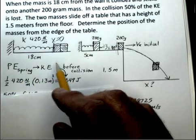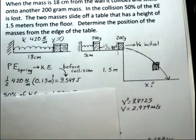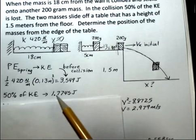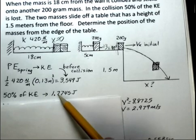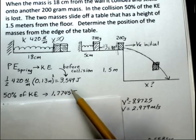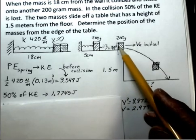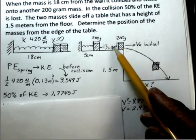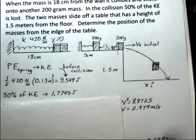That now becomes kinetic energy of this 200 gram object. We have a collision take place. We're told that 50% of the kinetic energy is lost. That means 50% of the kinetic energy will now be in this combined object of 400 grams when the two objects stick together.